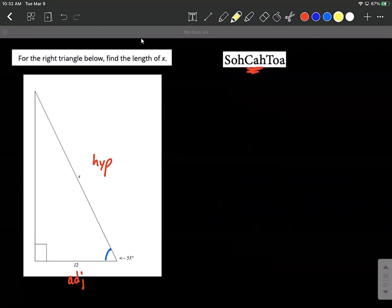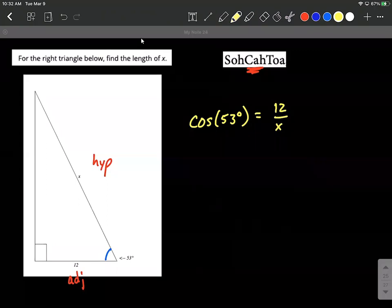Let's set this up so that the cosine of 53 degrees is going to be the adjacent 12 divided by the hypotenuse, which is indicated with an x. We just need to solve this equation down and we'll have our hypotenuse value x.